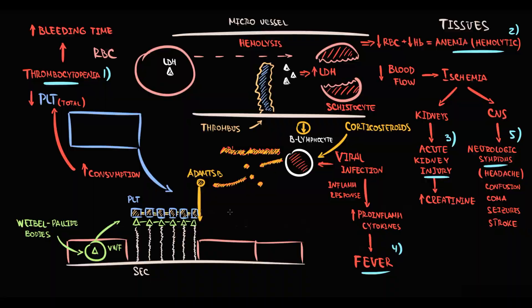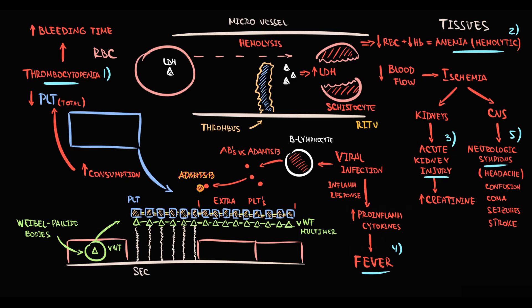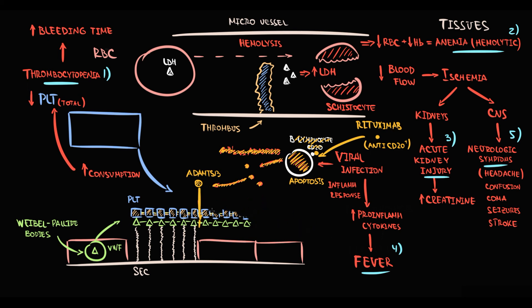The next option is rituximab. Rituximab is anti-CD20 antibodies. And CD20 receptors are present exactly on B cells. So, with injection of rituximab, rituximab binds to B lymphocytes and induces apoptosis. With decreasing amount of B lymphocytes, the production of autoantibodies against ADAMTS13 decreases. Thereby, the level of this enzyme will increase, and this will prevent massive thrombi formation.